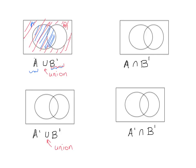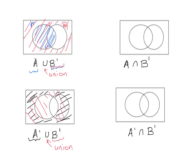Now let's go ahead and shade the bottom one — the other union question. We can shade everything in A complement first, then as well as everything outside B, which is B complement. So A complement union B complement — the only thing that did not get shaded is the middle intersection of the two circles.